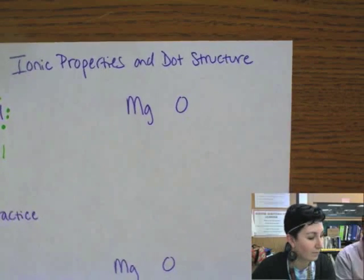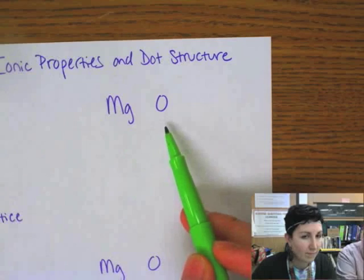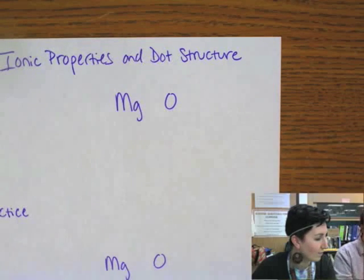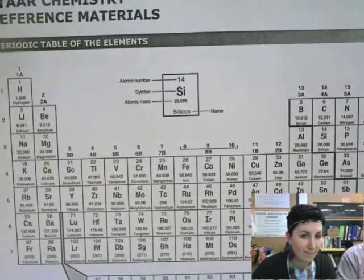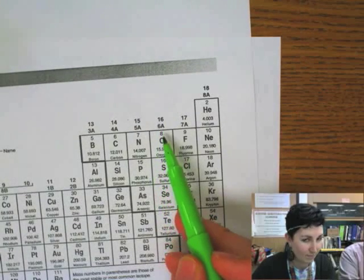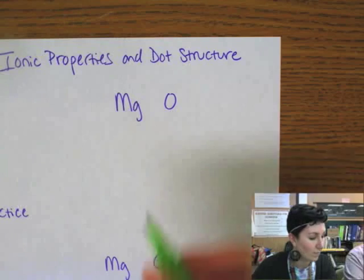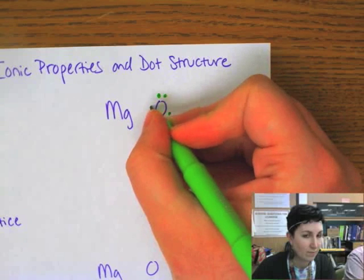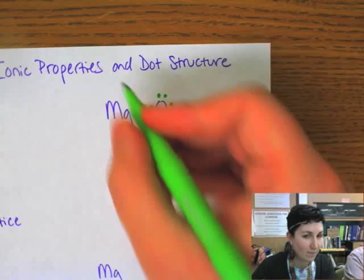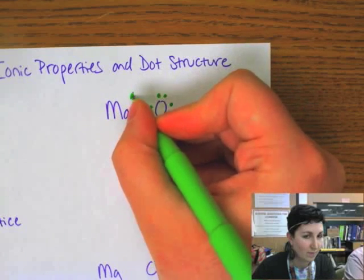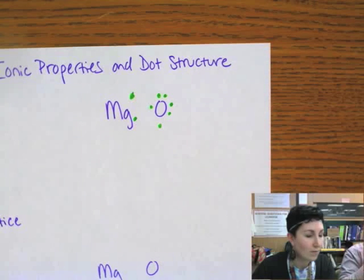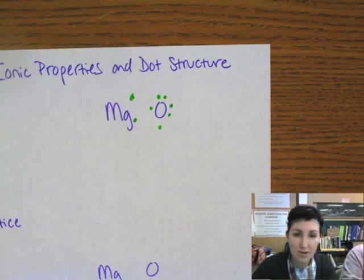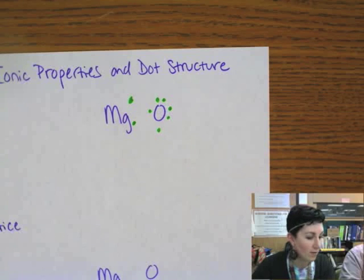So now we have magnesium and we have oxygen. So magnesium here, we have two electrons and oxygen looks like we have six because we're in group 16. So let's go ahead and fill that out. One, two, three, four, five, six. And magnesium has one, two. So do these look happy? Nope, because oxygen wants to have eight and it can take those two that it's missing from the magnesium there.